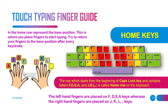We have to place our fingers on the home row each time we type. The home row is the row which starts from the caps lock key and contains the letters F, D, S, A and J, K, L, semicolon. The left hand should be placed on the FDSA keys, whereas the right hand fingers are placed on the JKL semicolon keys.